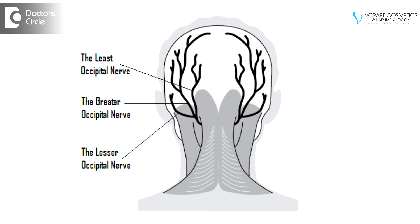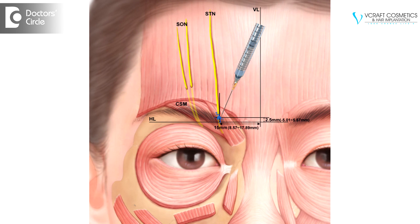Now, for the donor area, we give a regional block by blocking the lesser and greater occipital nerves, and for the frontal hairline area and the center, we can block the supraorbital and supratrochlear nerves. Anaesthesia is given using the finest needles in titrated quantities during hair transplantation.